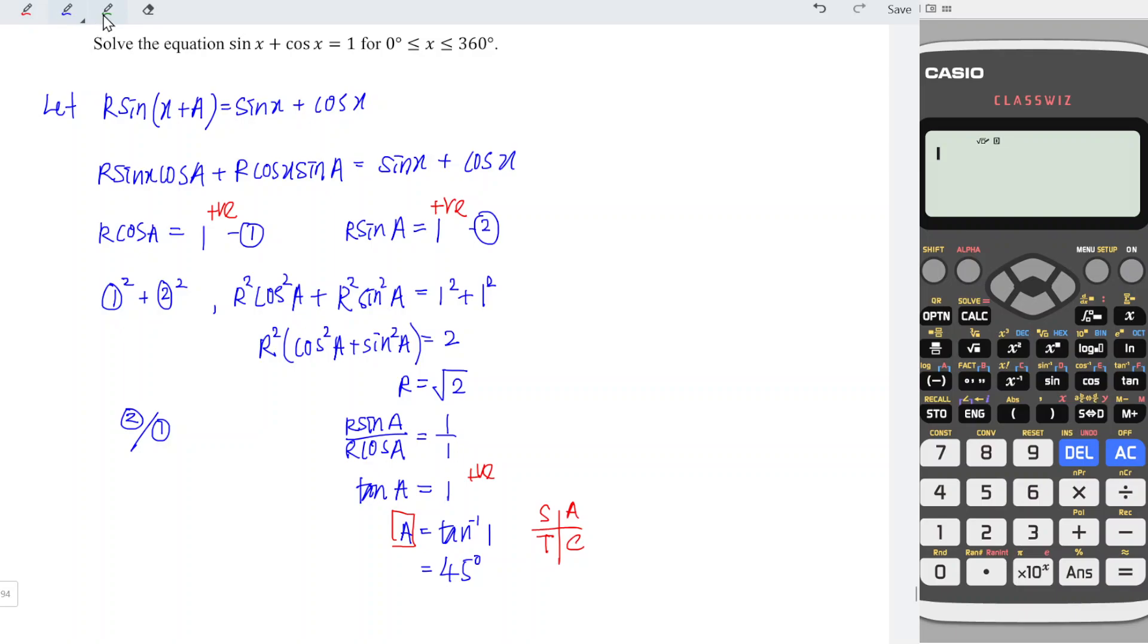Next, substitute back to the equation we have. R, which is √2, times sin(x + a), which is 45 degrees, equals sin x + cos x, which equals 1 according to the question.